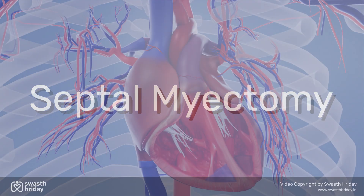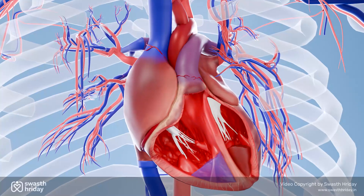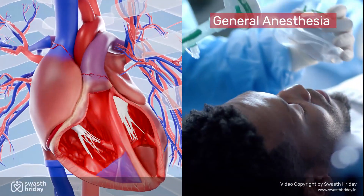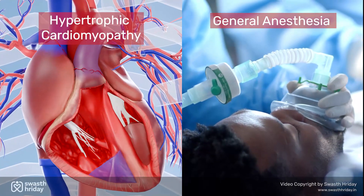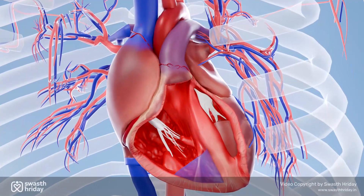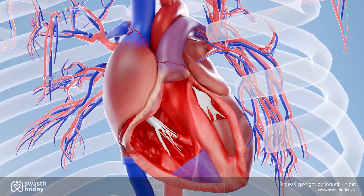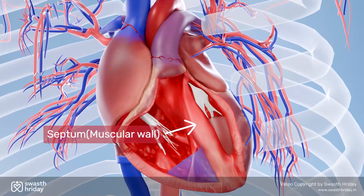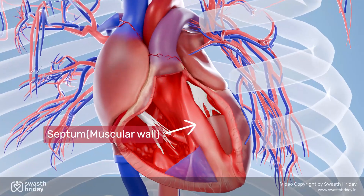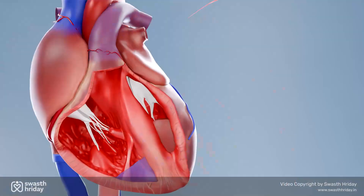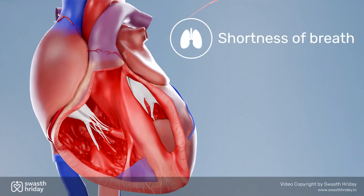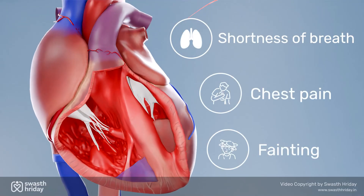Septal myectomy is an open-heart surgery performed under general anesthesia to treat hypertrophic cardiomyopathy, a condition where the septum, the muscular wall between the heart's two lower chambers, becomes abnormally thick and obstructs blood flow. This thickened muscle can cause symptoms such as shortness of breath, chest pain, and even fainting.